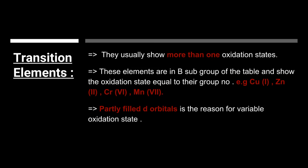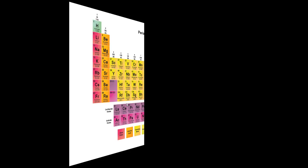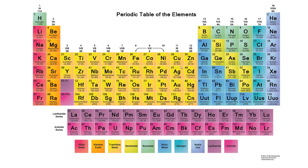The transition elements, which are the subgroup B elements, usually show more than one oxidation state. These elements also show oxidation states equal to the group number, as can be seen for copper (+1), zinc (+2), chromium (+6), and manganese (+7). Group 1B includes the coinage metals — copper, silver, and gold (AU). Group 2B includes zinc, cadmium, and mercury.